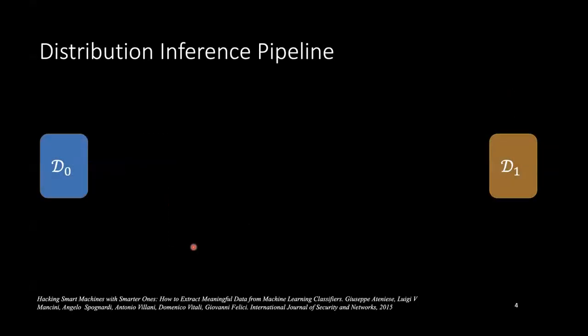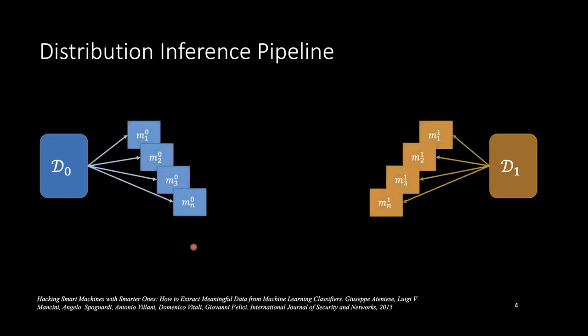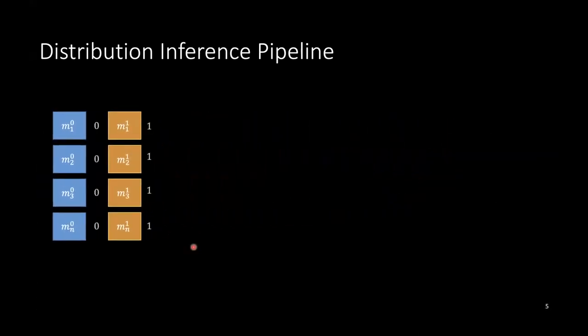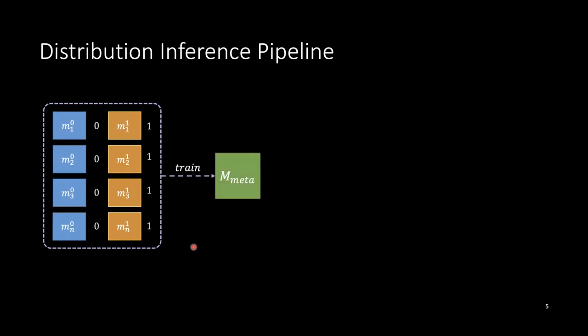If you look at works in distribution inference, which is often also known as property inference in the field, you have this generic setup of these two distributions. The way it works is that the adversary will train some n-shadow models on both of these distributions. Based on some feature extraction method and labels assigned as 0 and 1, depending on which distribution it's coming from, train some sort of a meta-classifier on it. And then at test time, by looking at some model M, the adversary can, with high confidence, infer which of the two training distributions this model M came from.